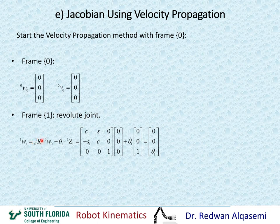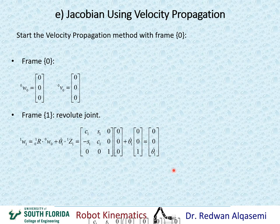We want to make sure that we transpose that rotation before we plug it in here. This is multiplied by omega 0,0, which we found earlier in frame 0, and then we add to this theta 1 dot times Z1,1. Z1,1 is always 0, 0, and 1. If we do this multiplication and addition, we get 0, 0, theta dot 1 for omega 1 relative to 1.